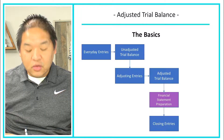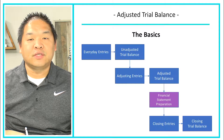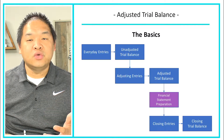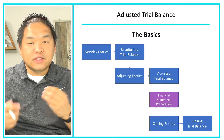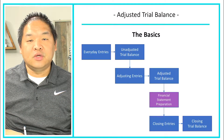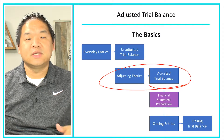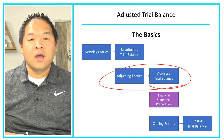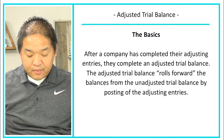Then we'll have closing entries, and those closing entries lead us into the closing trial balance. That closing trial balance is what we use to start the new period or new year — we need to close out the appropriate accounts to start fresh. Our focus right now is the adjustments and the adjusted trial balance, but I wanted to give you the full picture of the accounting cycle.